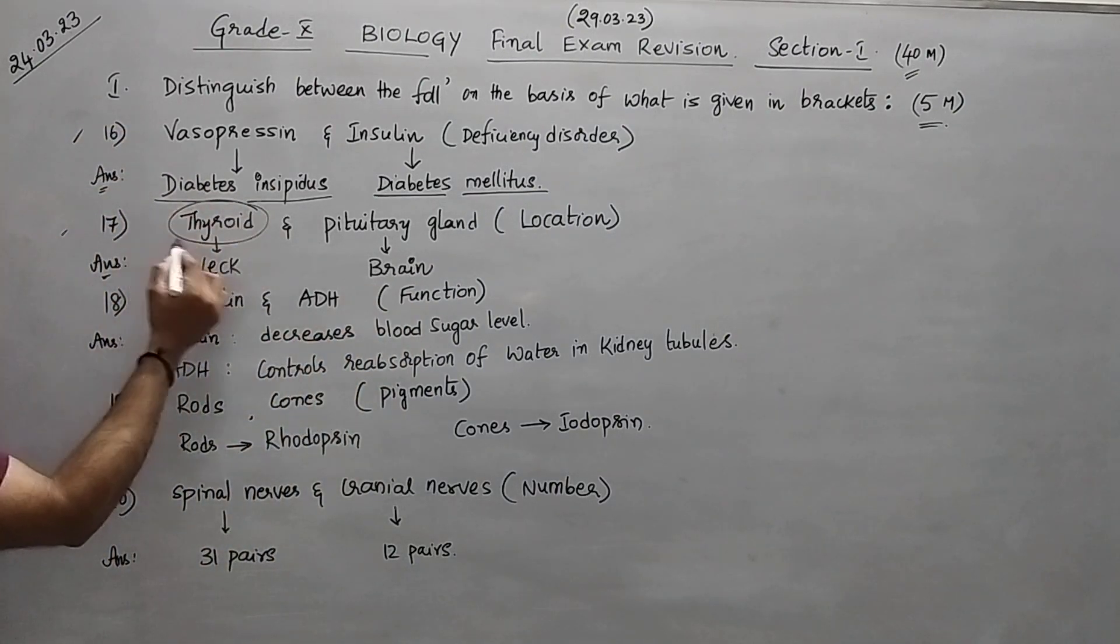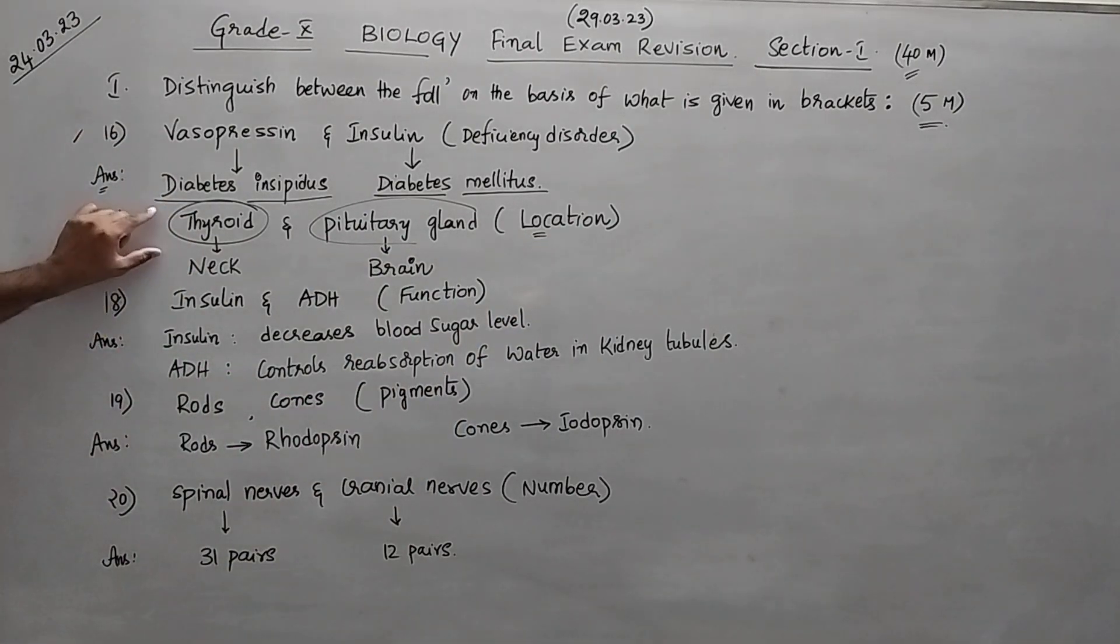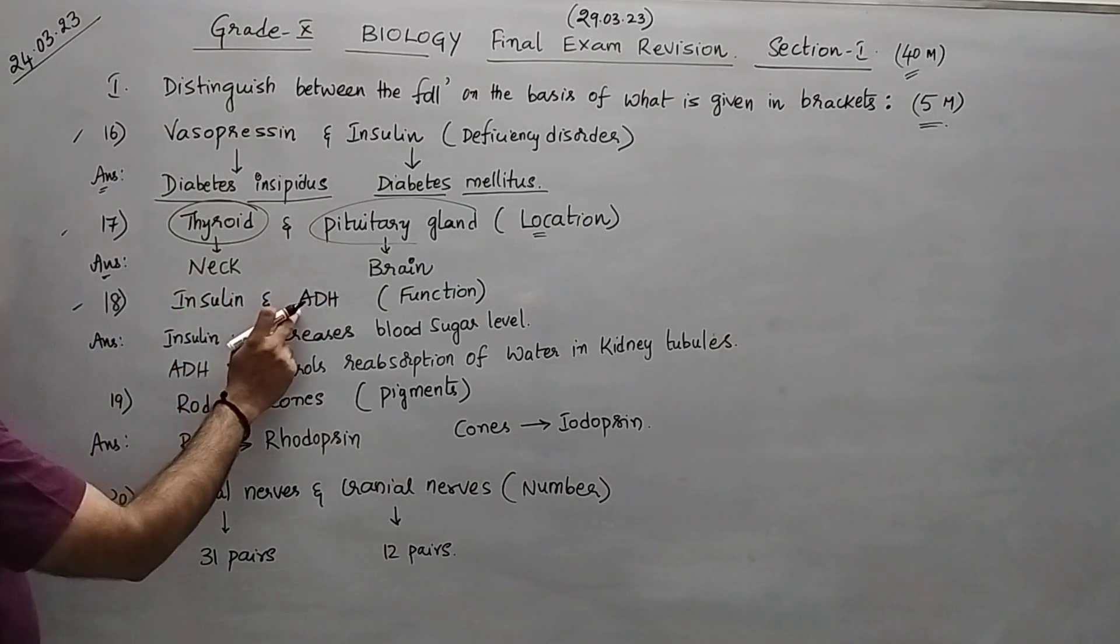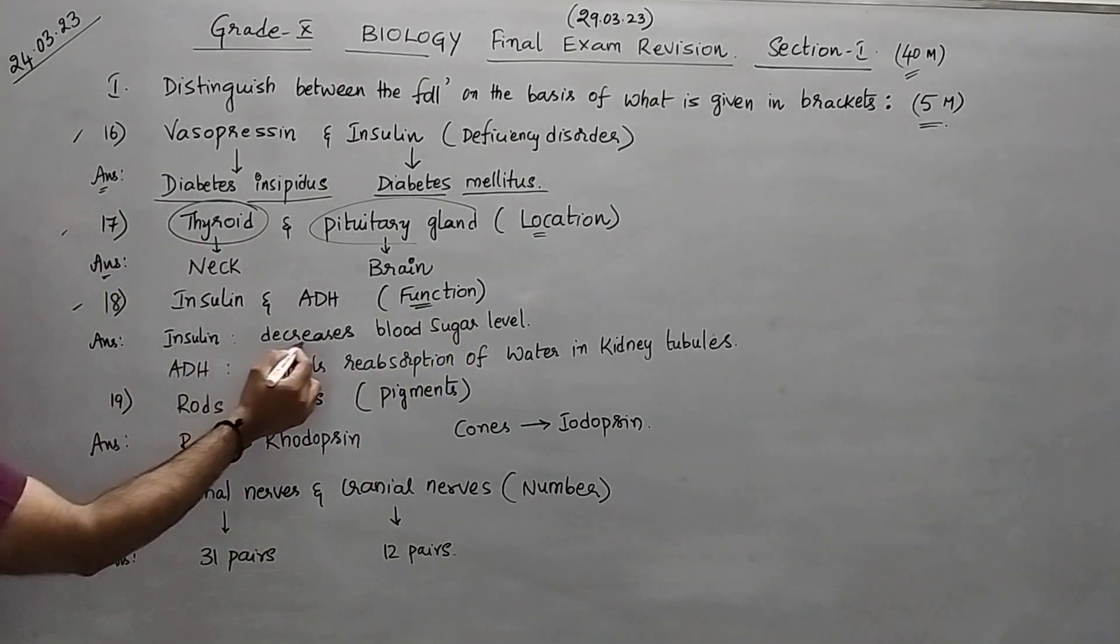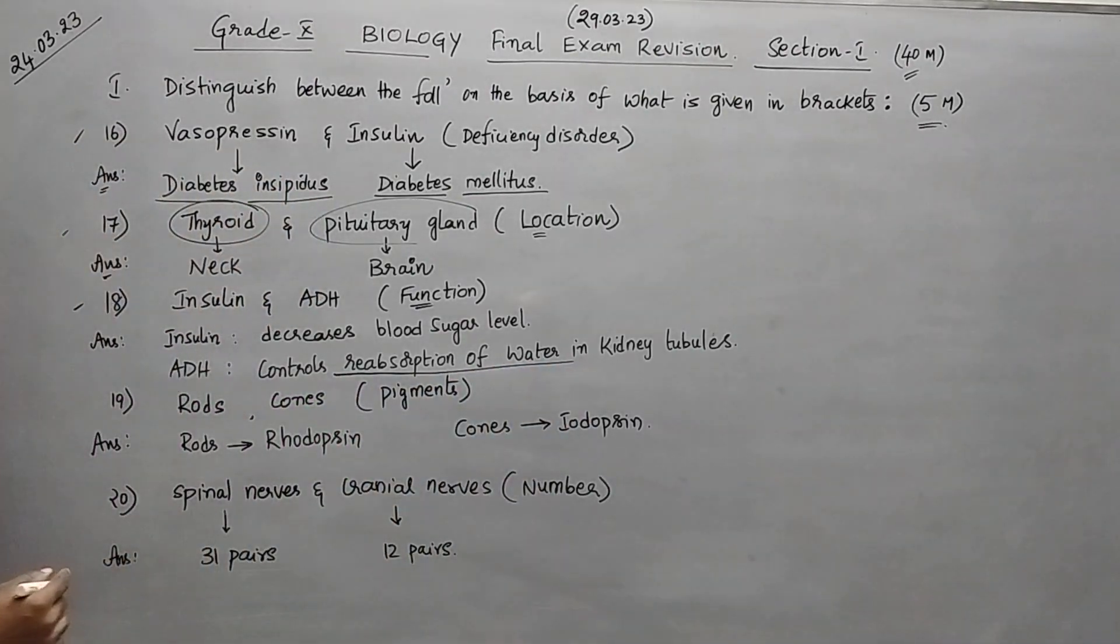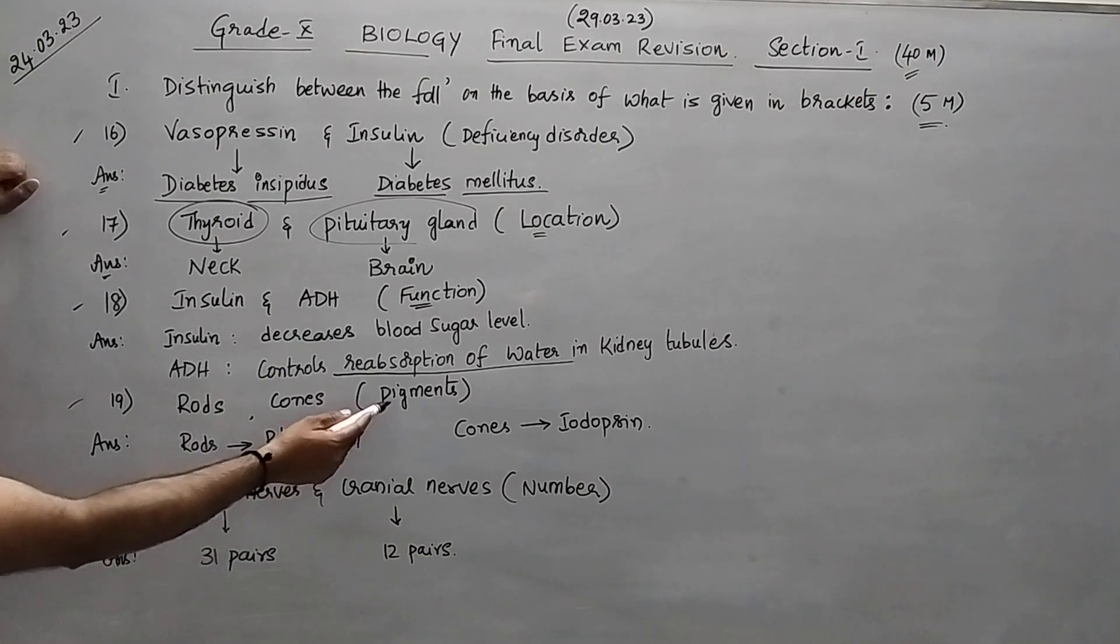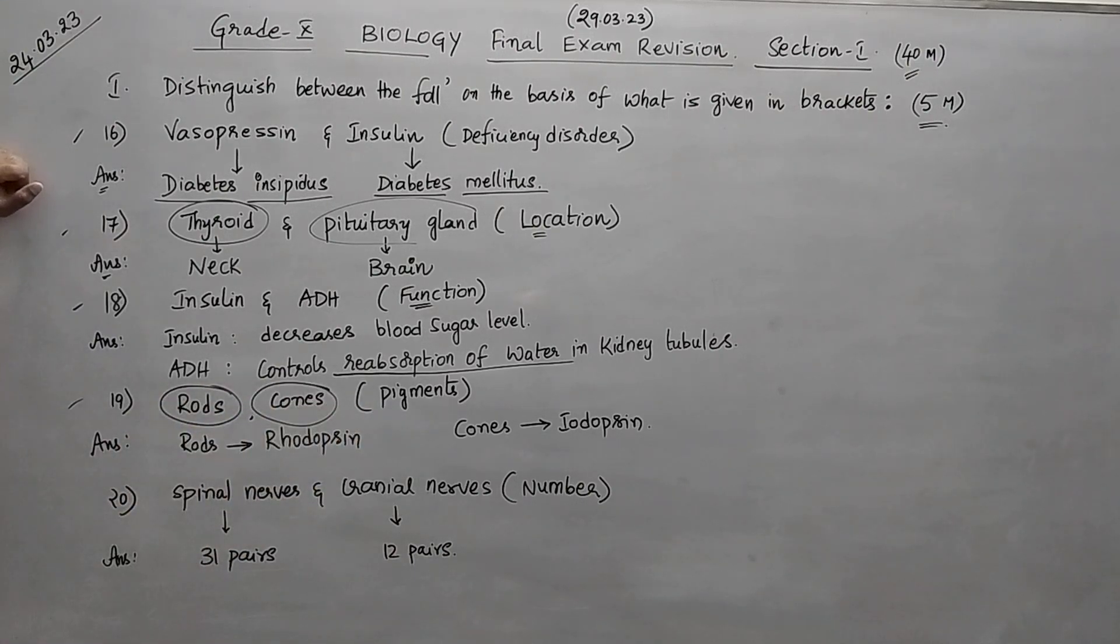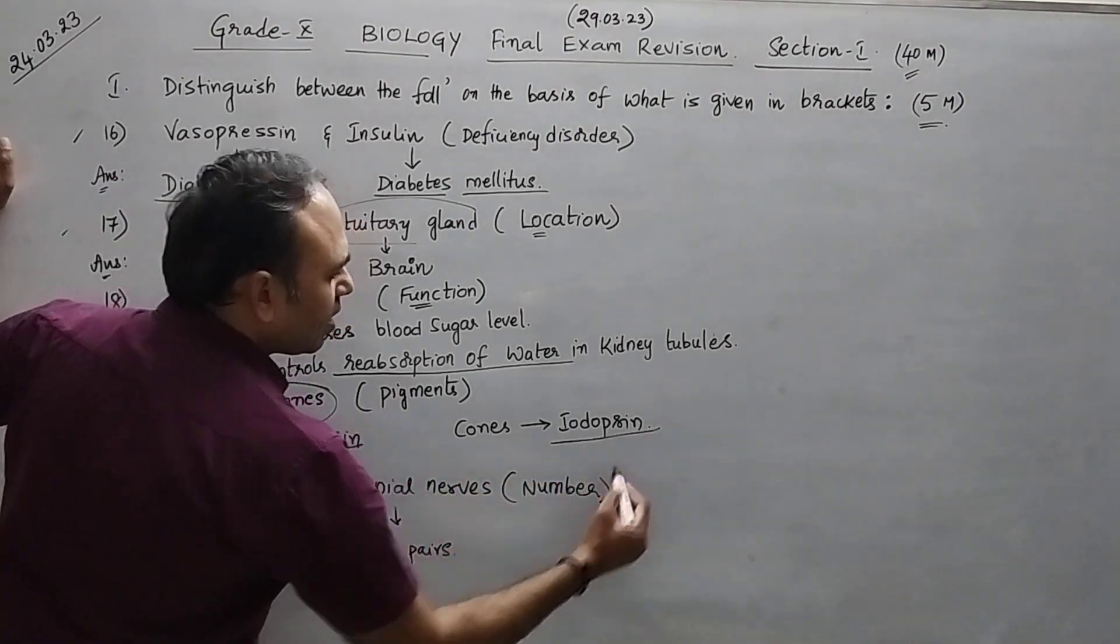Question number seventeen, between thyroid and pituitary gland, what is the location? Thyroid is present in the neck, pituitary gland is present in the brain. Insulin and ADH, anti-diuretic hormone, function - insulin will decrease the blood sugar level and ADH controls reabsorption of water in the kidney tubules. Question number nineteen, what are the pigments present in rods and cones? In the rods the pigment is rhodopsin, and in the cones the pigment is iodopsin.